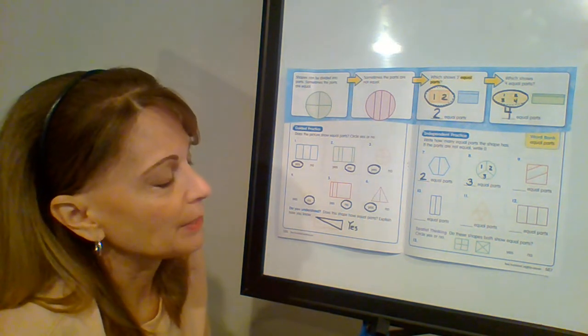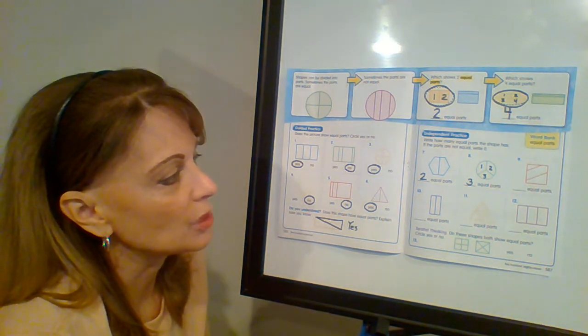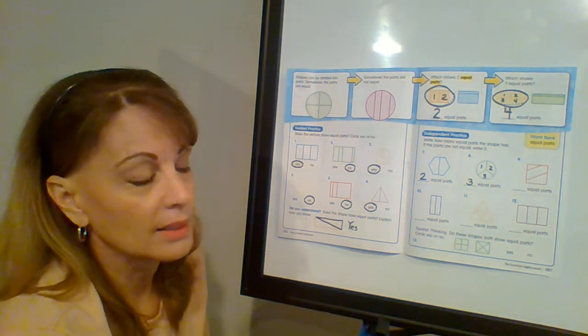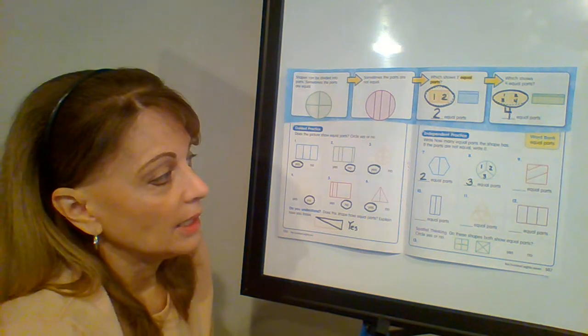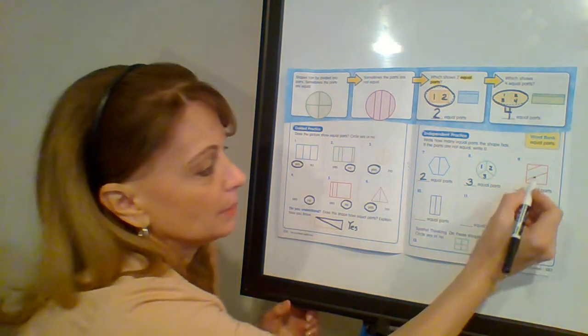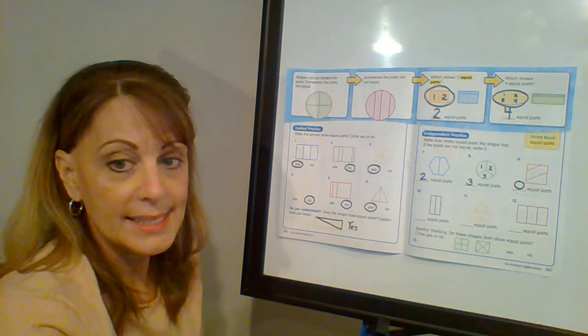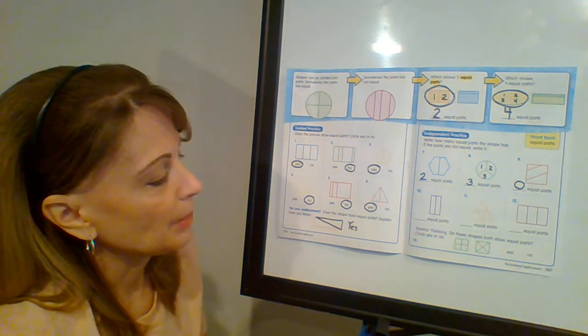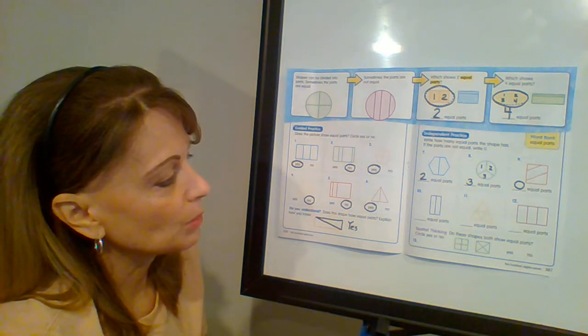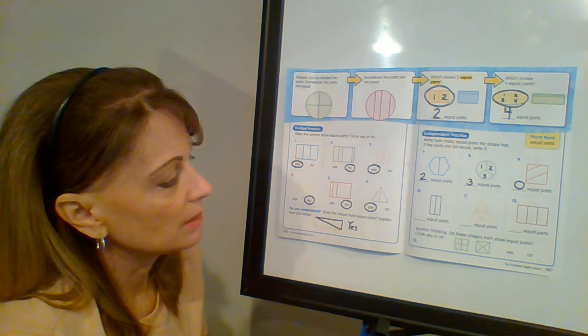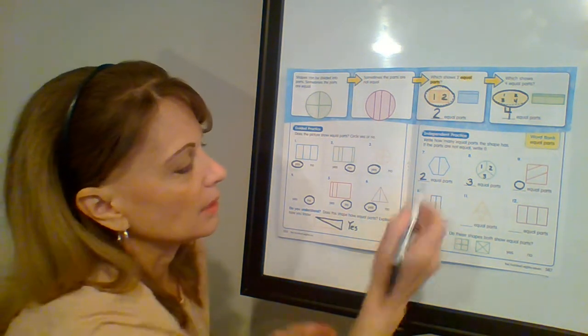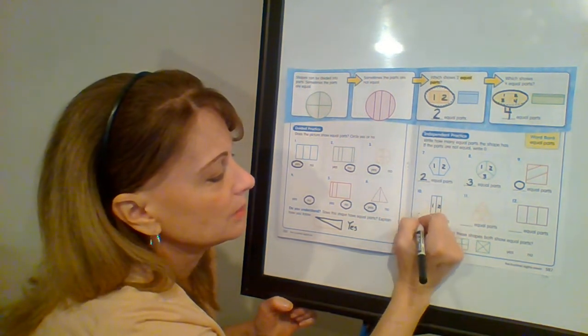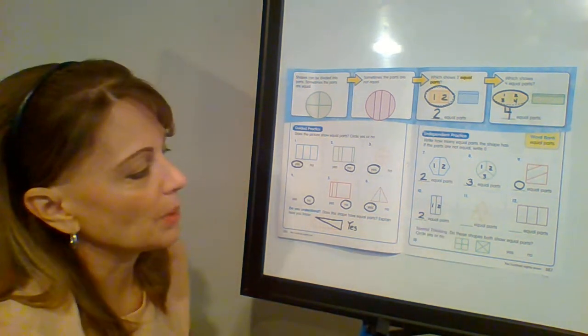How about number nine? How many equal parts do you see? Go ahead and write it. Well, I see three parts, but none of them are equal. So that gets a zero. How about number ten? How many equal parts do you see? Here we have one, two. Here we have one, two. Two equal parts.